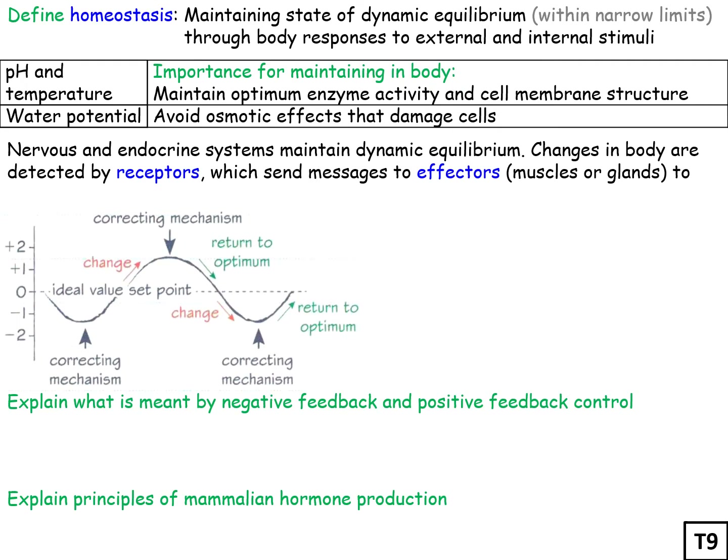The nervous and endocrine systems maintain dynamic equilibrium. Changes in the body are detected by receptors which send messages to effectors, which are muscles or glands. These muscles or glands could either reverse the change or increase it using feedback systems.